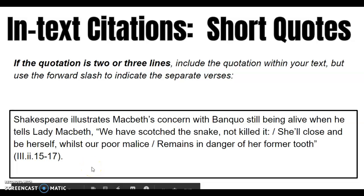If the quotation is two or three lines, you're still going to include the quotation within your text, but you're going to use the forward slash to indicate the separate verses. So in the original text, when it goes from one line to the next, you just put these slashes in place, but the citation works the same way.